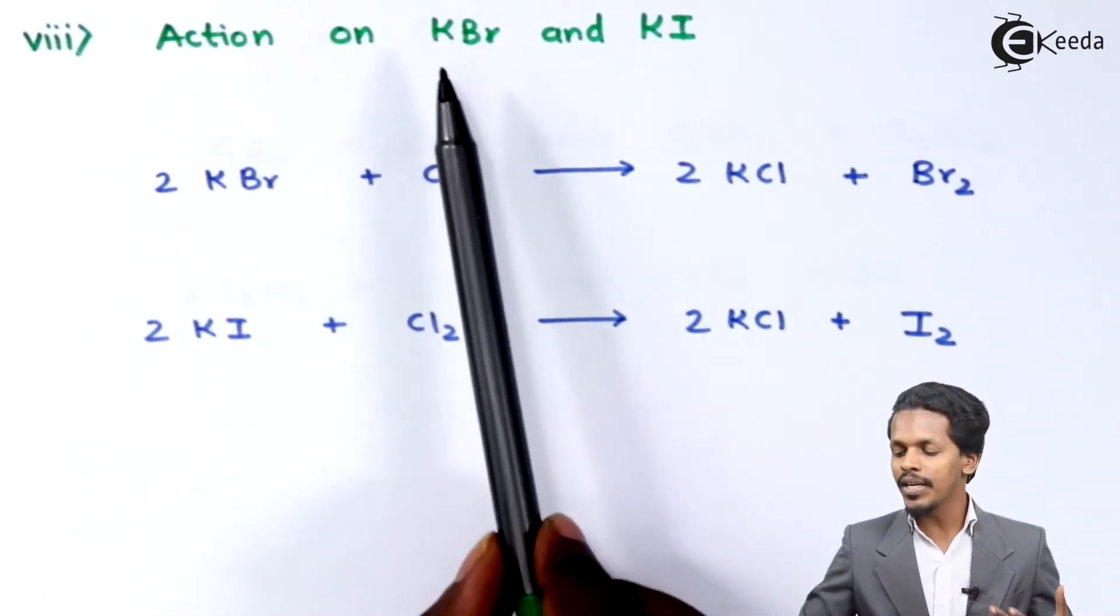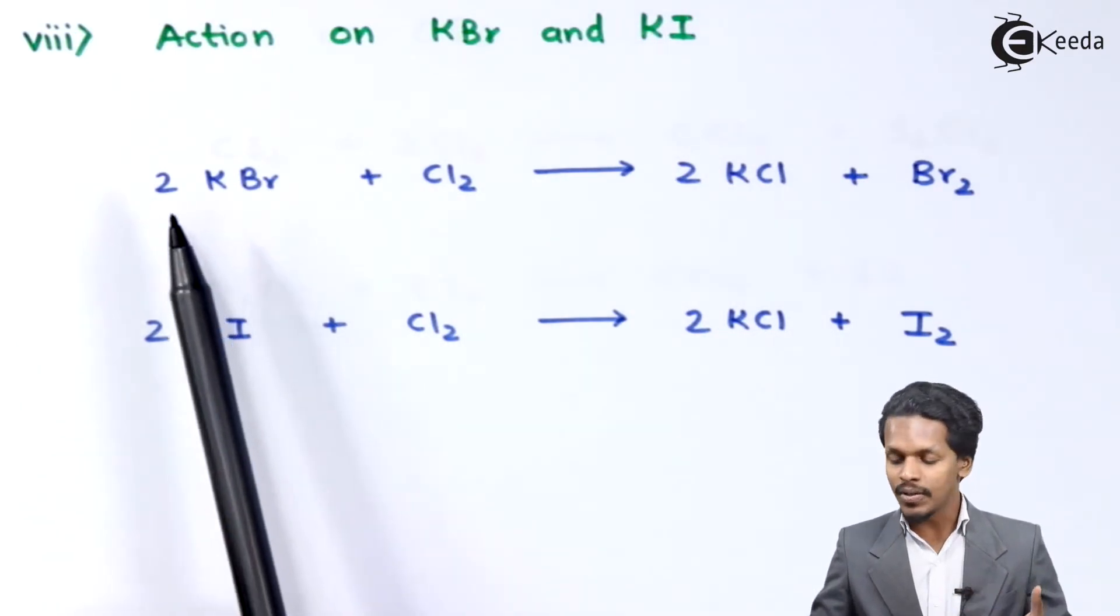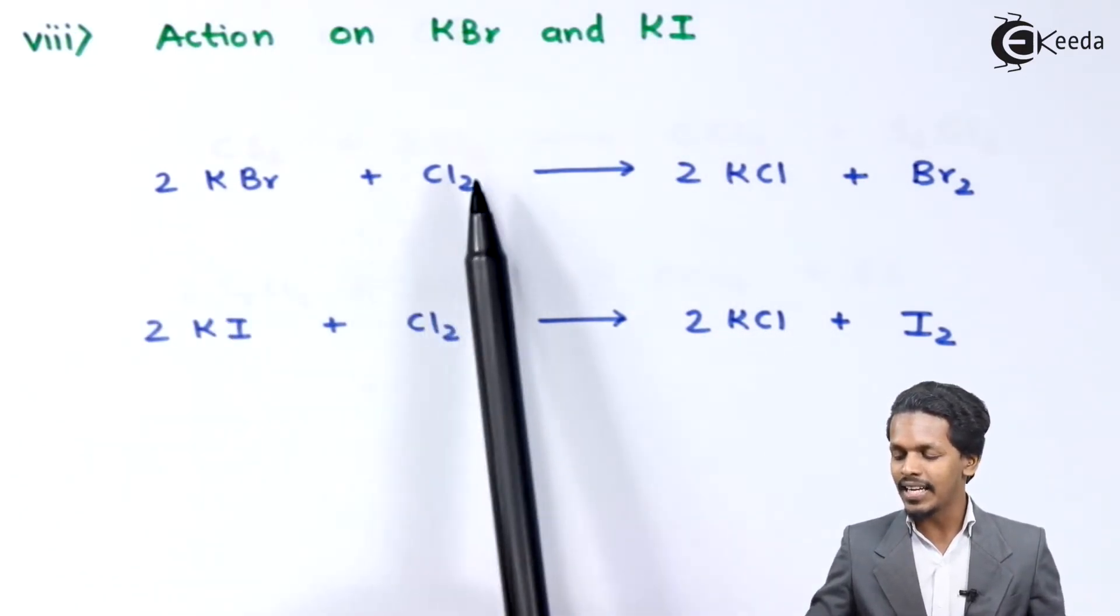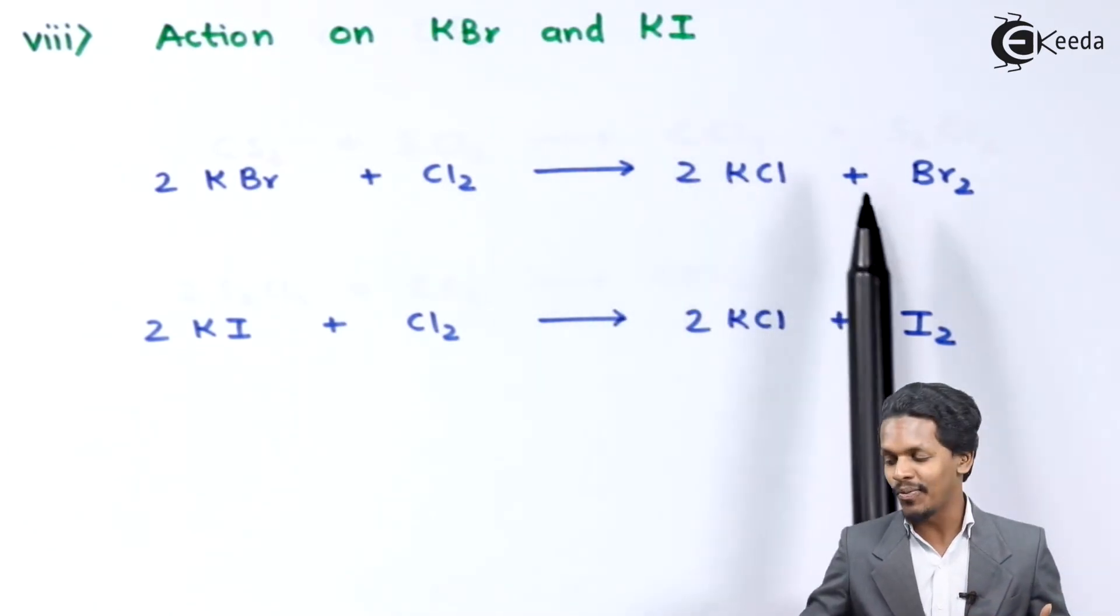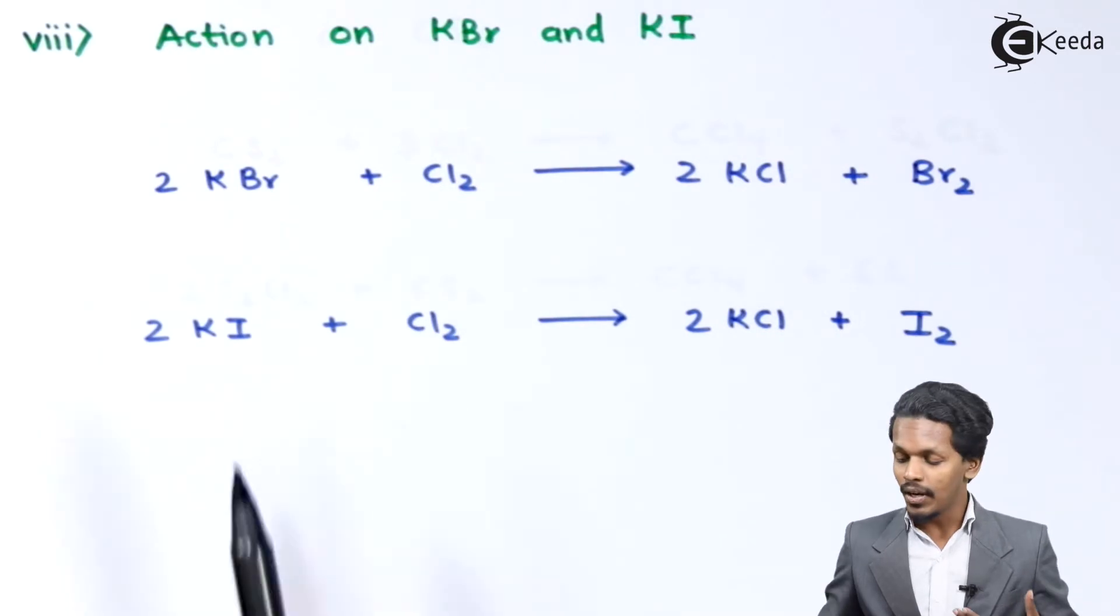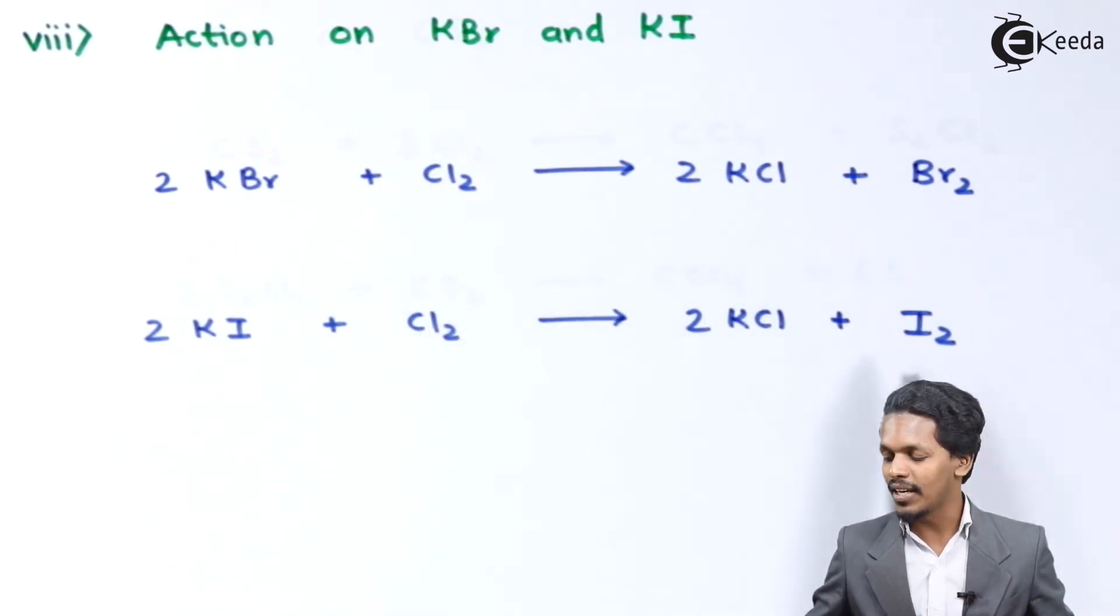The next reaction is action of chlorine on KBr and KI. So for these potassium salts, whenever 2 moles of KBr is reacted with Cl2, then the product we get is 2 moles of KCl along with Br2. And whenever 2 moles of KI is treated with Cl2, we get 2 moles of KCl along with I2.